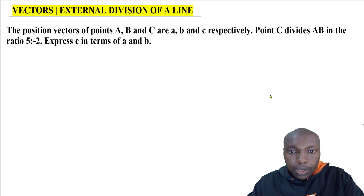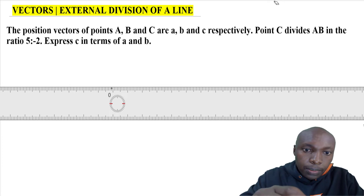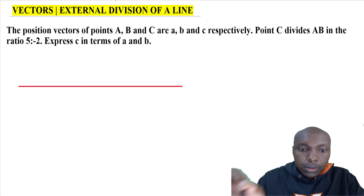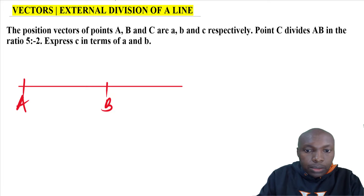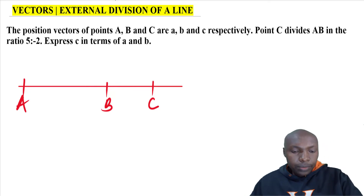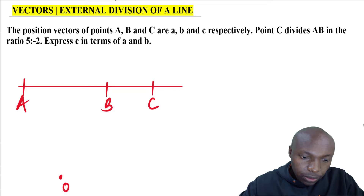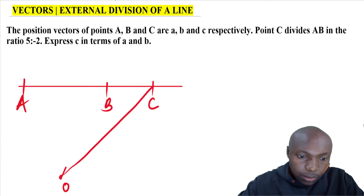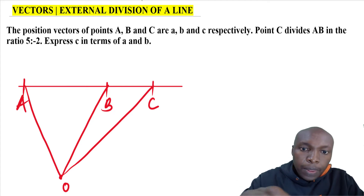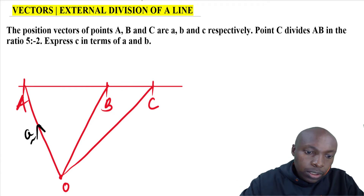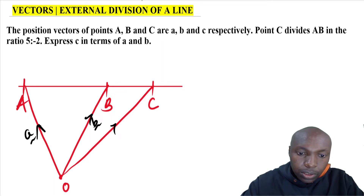The first thing we're going to do is locate diagrammatically the position vectors of A, B, and C. So let's draw these points. We have point A, and then this one is B. Then we have C dividing line AB externally, so we locate C outside AB. From origin O: OA is a, OB is b, and OC is c.